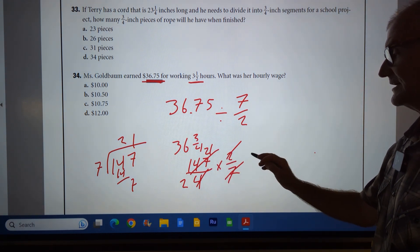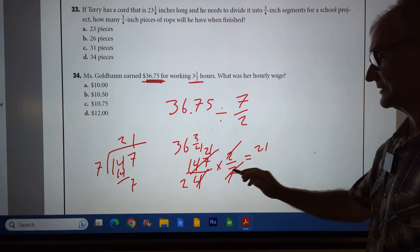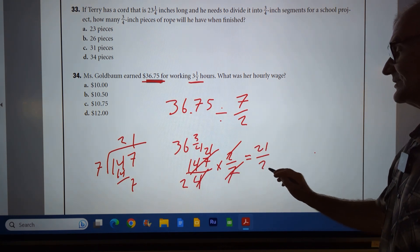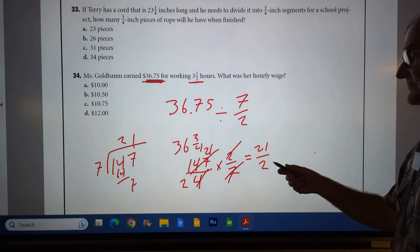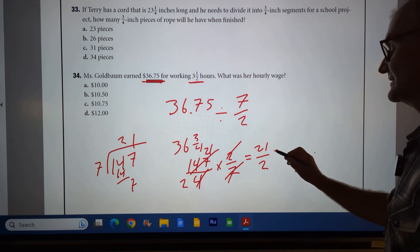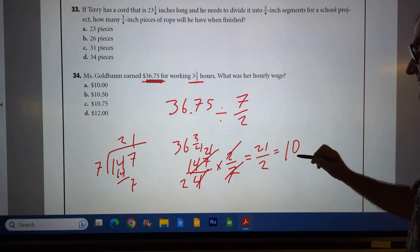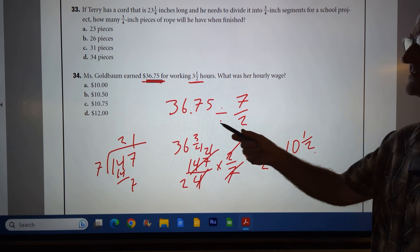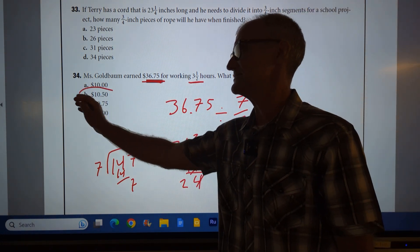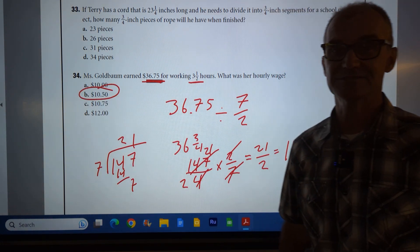So now I have 21 times one, two times one, so I have 21 halves, right? 21 halves. Two goes into 21 ten times with one left over, so I have 10 and a half. 10 and a half in dollars is $10.50. Correct answer, answer B.